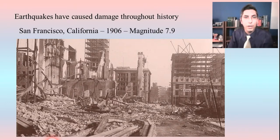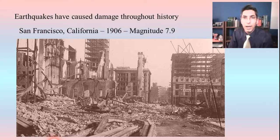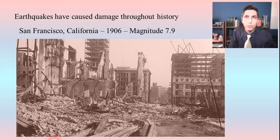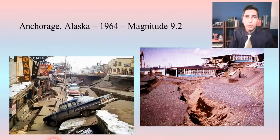Earthquakes have caused lots of damage throughout history. For example, the 1906 San Francisco earthquake was a magnitude 7.9, and a lot of the damage was actually caused by the fires that followed the earthquake, making a bad situation even worse.